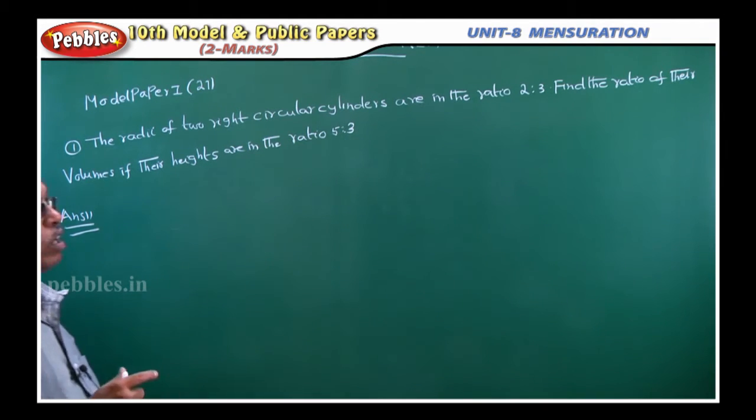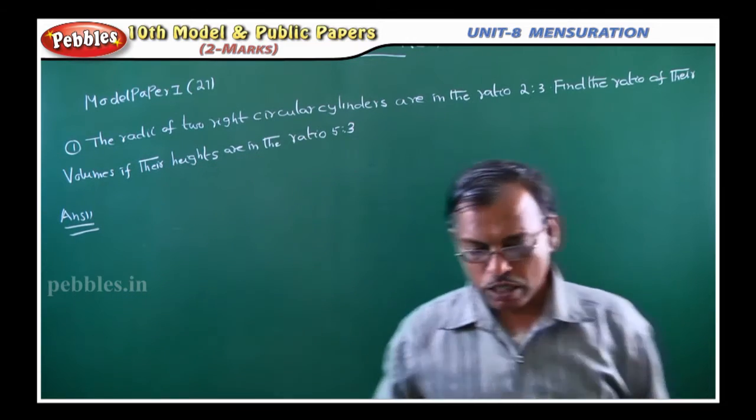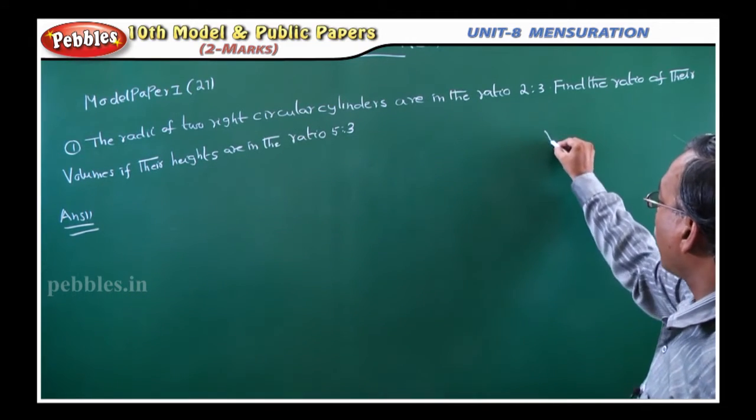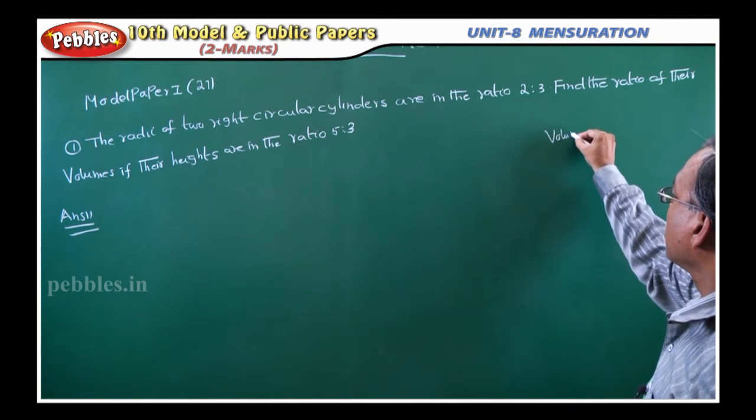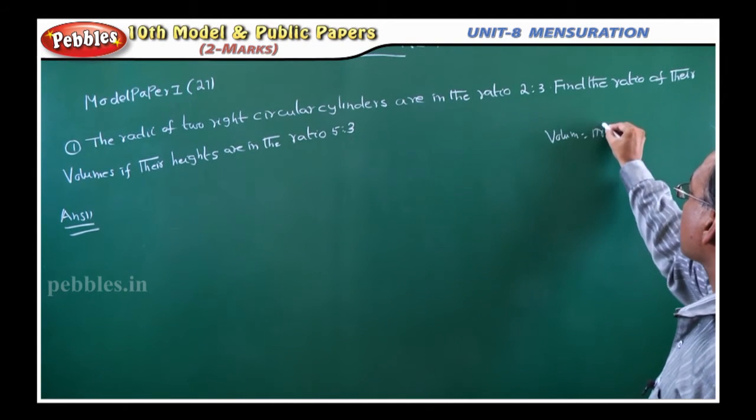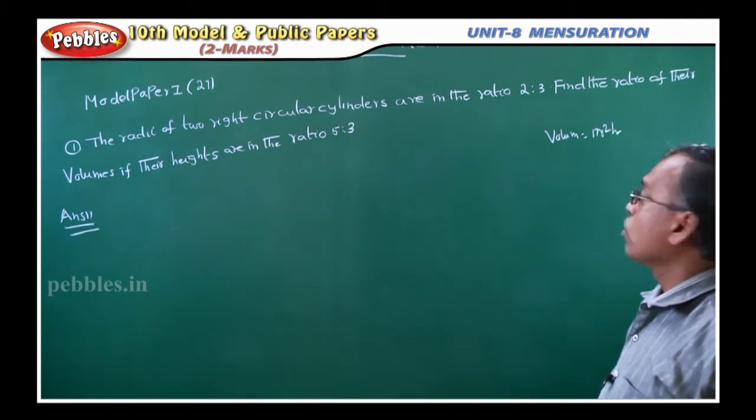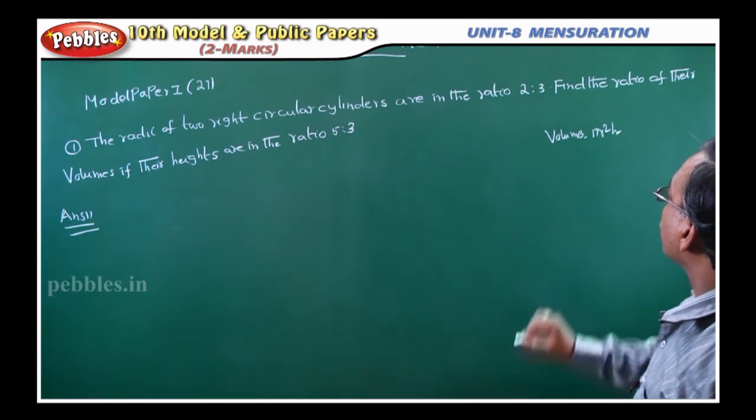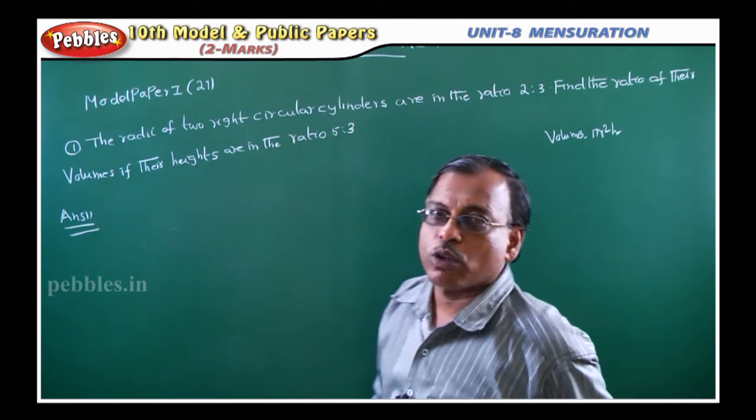For this, first of all you should know the volume of the right circular cylinder formula. What is the volume formula? Volume is equal to pi r square h. This is the formula to find the volume of the right circular cylinder.